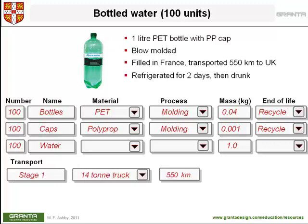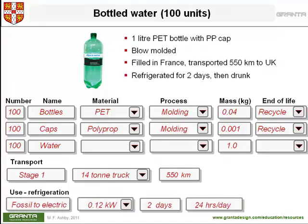The next line of the input is the transport itself: a 14-ton truck, 550 kilometers. And the final entry is the use phase — the refrigeration. The refrigeration uses electricity. We have to include the inefficiency, the losses associated with converting fossil fuel to electric power. The second box is the quantity of electric power required. The last two boxes are the number of days and hours per day for which the refrigeration is carried out.